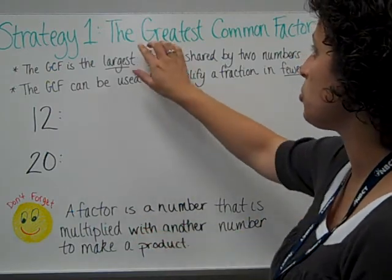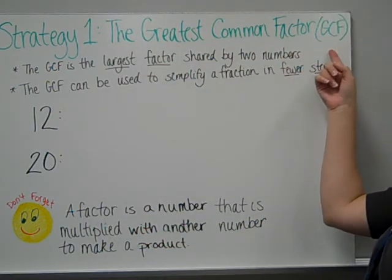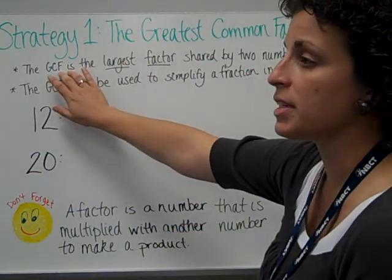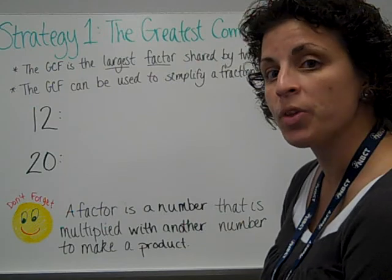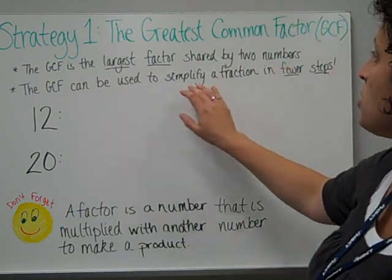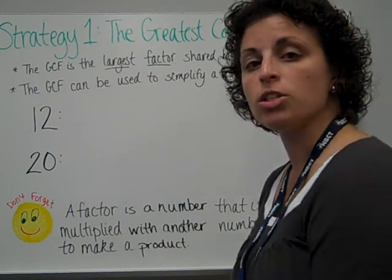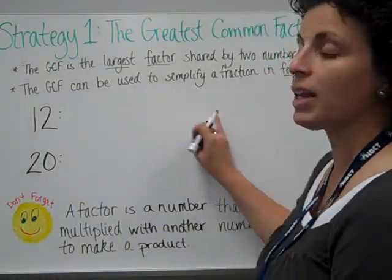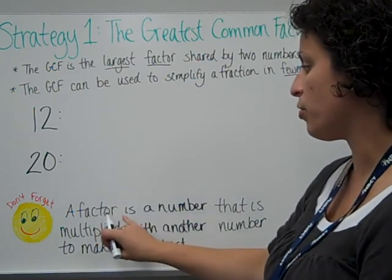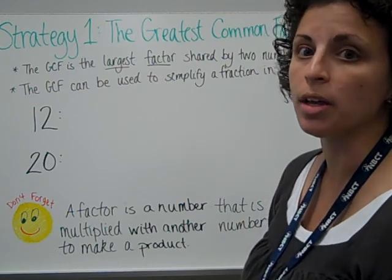So our first strategy is to reduce by the greatest common factor, also known as the GCF. The GCF is the largest factor shared by the two numbers. It's a way to simplify a fraction in fewer steps. To find the greatest common factor, or the GCF, we're going to make a list of factors. And we need to remember that a factor is a number that is multiplied with another number to make a certain product.